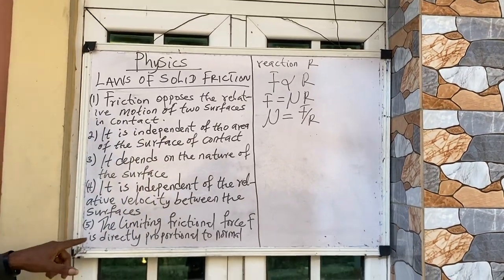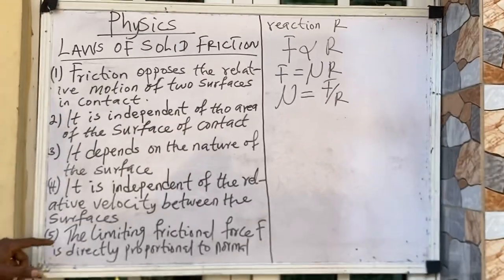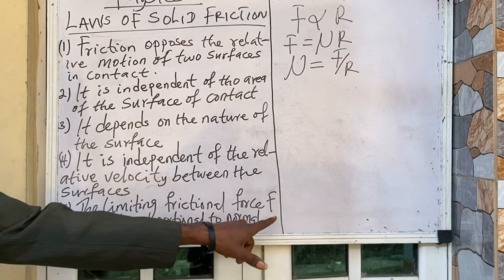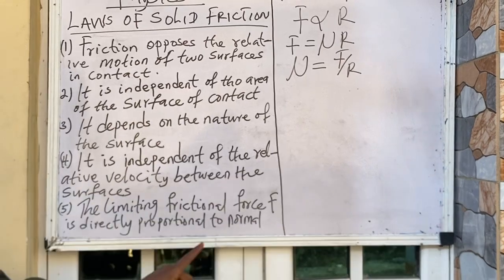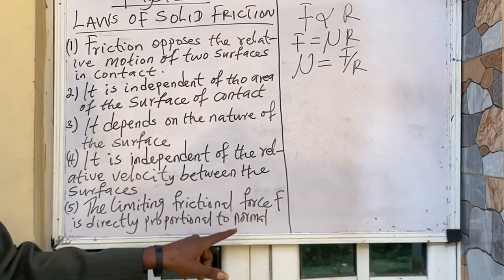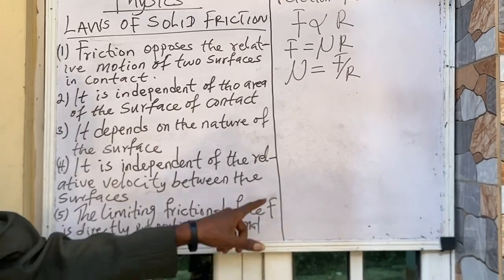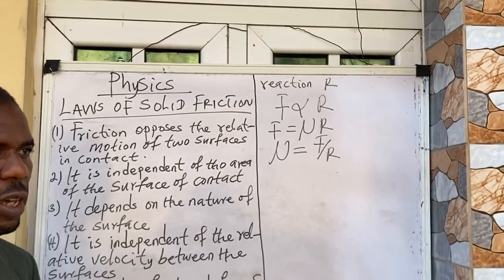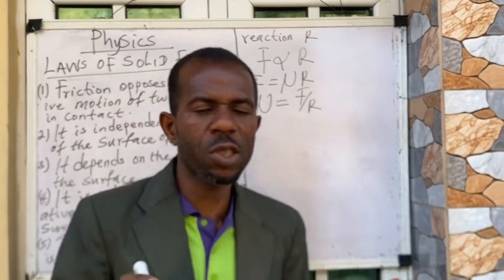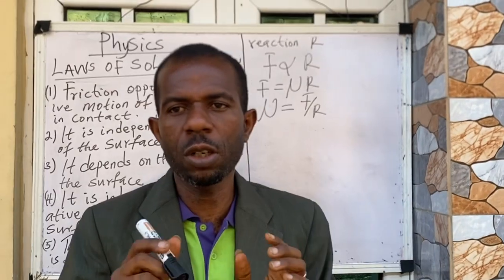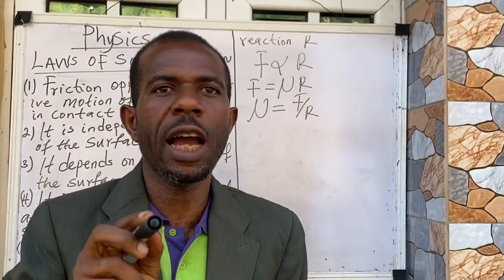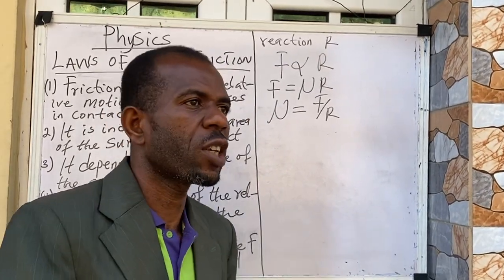The fifth law says that the limiting frictional force F is directly proportional to the normal reaction R. This is explained by Newton's third law of motion, which says that to every action there is an equal and opposite reaction.